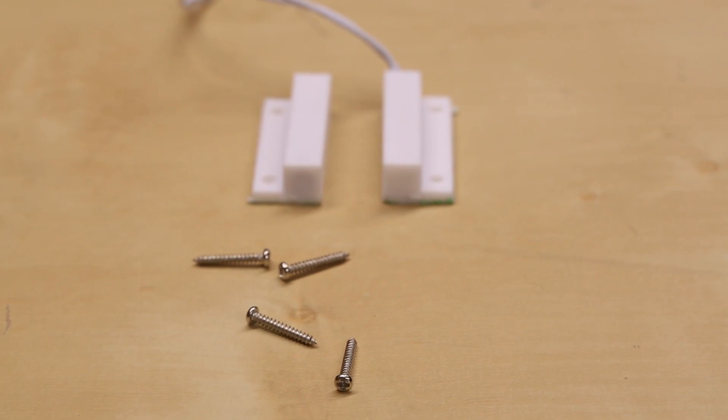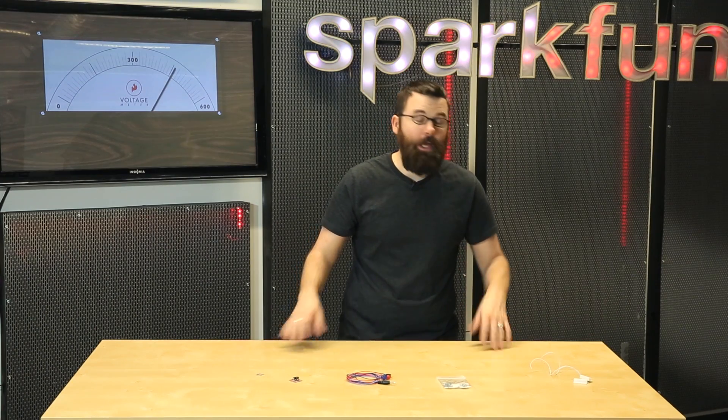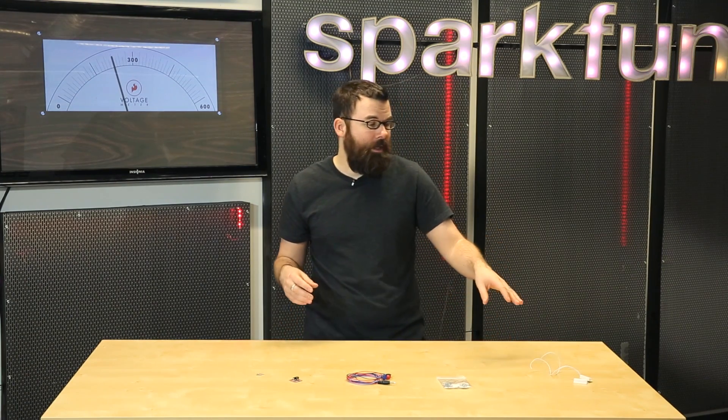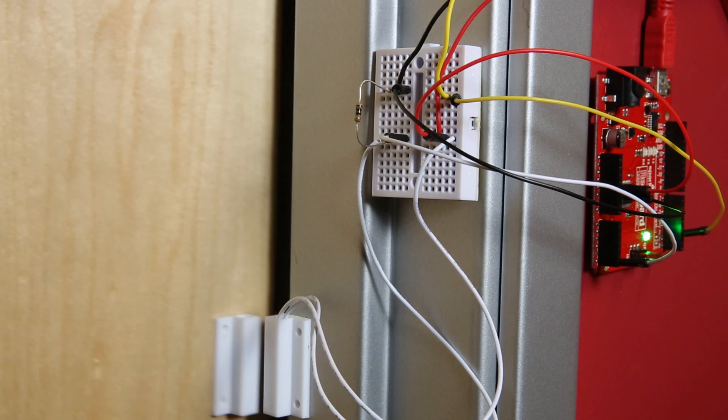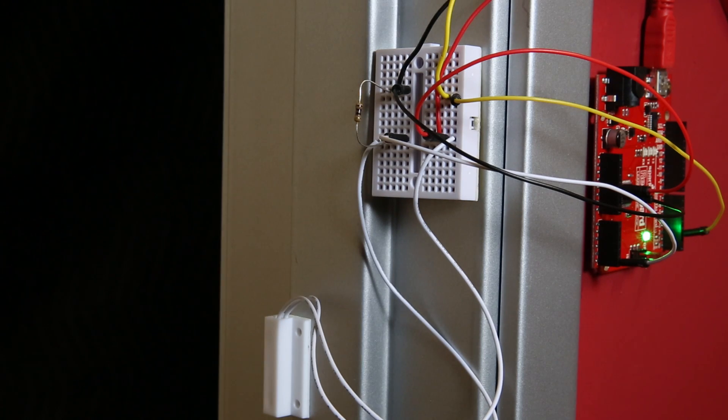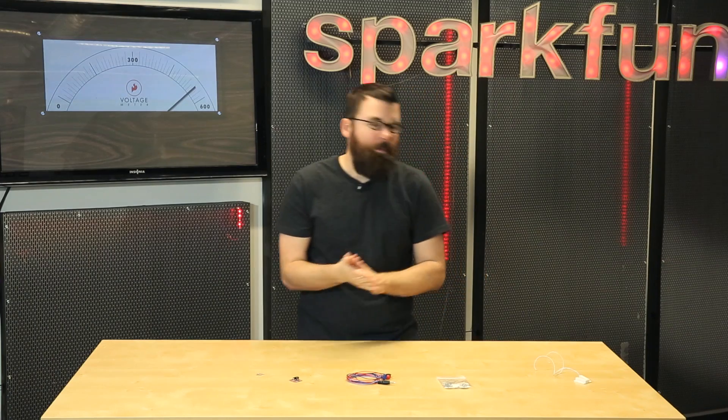Lastly, we have this little guy. This is a simple reed switch mechanism that you see commonly in alarm systems, and you would see this on a door or a window. When it breaks, then you get an alarm signal, and you can detect that a door was opened or a window was broken or something like that. They have a lot of interesting applications beyond just an alarm system.